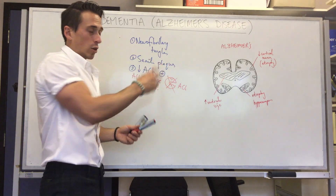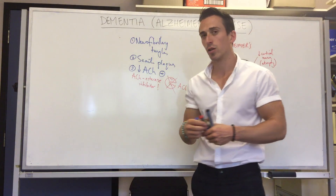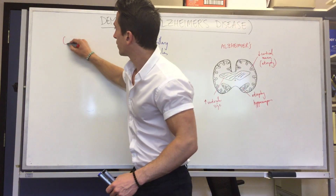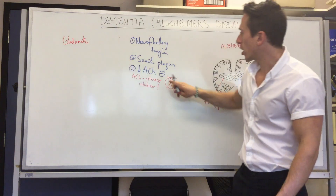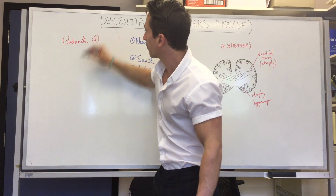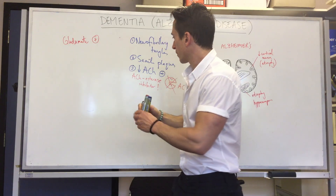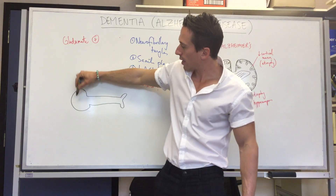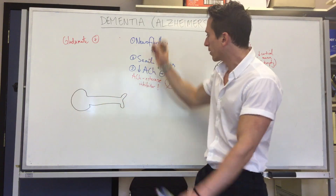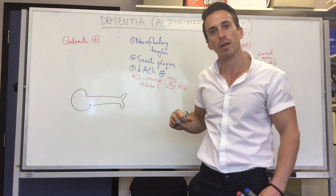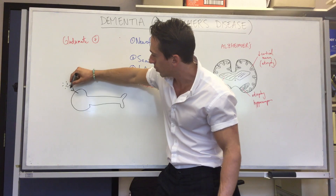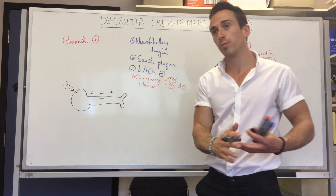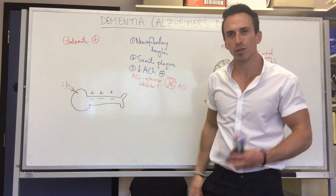Another theory for why neuronal loss occurs is glutamate excitotoxicity. Both acetylcholine and glutamate are excitatory neurotransmitters in the central nervous system. When glutamate binds to its receptors on a neuron, it opens specific channels — including calcium channels. Inside a neuron is negative compared to outside, and an action potential is a depolarization event where positive ions rush into the cell.